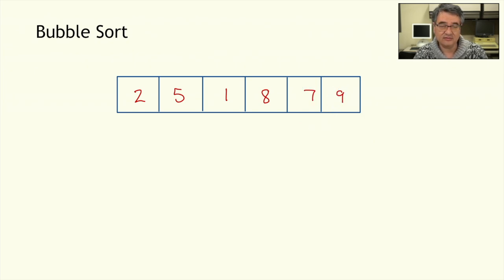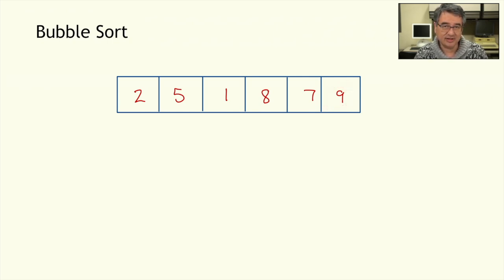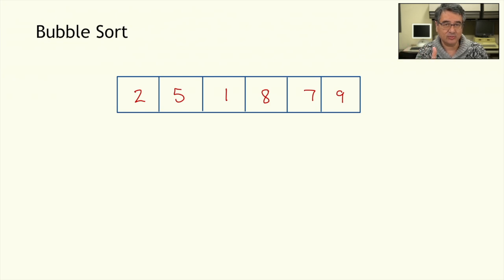At the end of one pass through the array, the largest value — 9 in this case — has found its way up to the top of the array. This is why it's called bubble sort. As we make passes through the array, the largest value will find itself, or bubble, its way towards the end of the array.